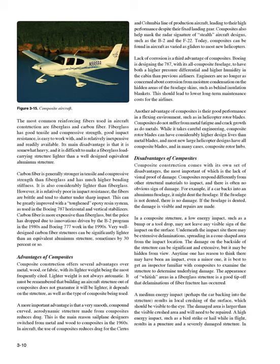Composites also help mask the radar signature of stealth aircraft designs, such as the B-2 and the F-22. Today, composites can be found in aircraft as varied as gliders to most new helicopters. Lack of corrosion is a third advantage of composites. Boeing is designing the 787, with its all-composite fuselage, to have both a higher pressure differential and higher humidity in the cabin than previous airliners. Engineers are no longer as concerned about corrosion from moisture condensation on hidden areas of the fuselage skins. This should lead to lower long-term maintenance costs for the airlines. Another advantage of composites is their good performance in a flexing environment, such as in helicopter rotor blades. Composites do not suffer from metal fatigue and crack growth as do metals. Composite rotor blades can have considerably higher design lives than metal blades, and most new large helicopter designs have all composite blades and, in many cases, composite rotor hubs.